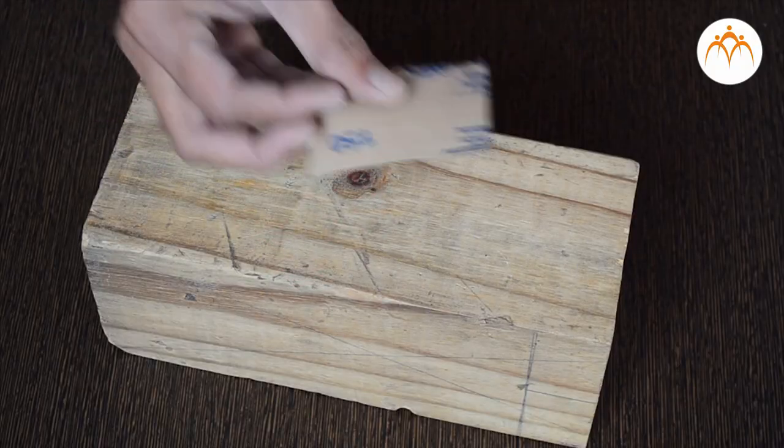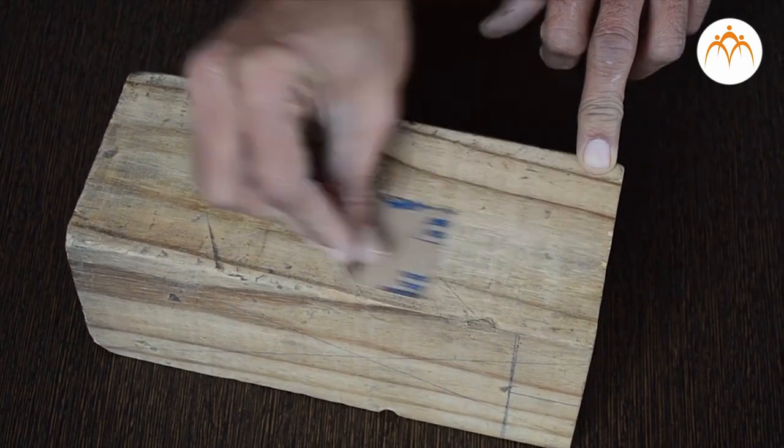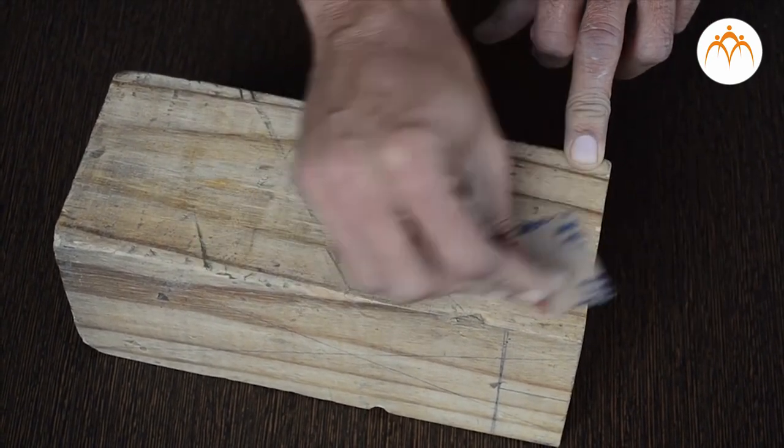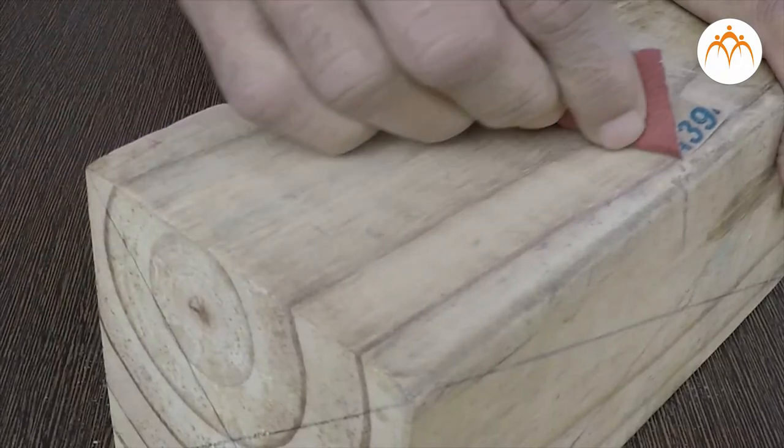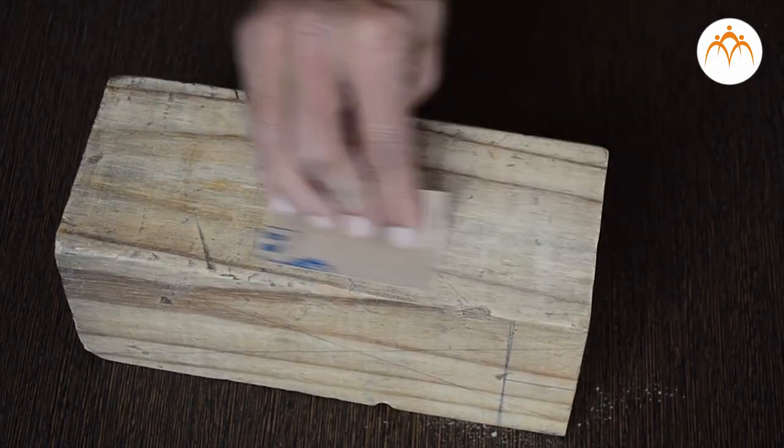Rub the sandpaper lightly on a piece of wood. Listen for the sound rubbing makes. Try rubbing fast and slow, and pressing lightly and heavily to get different sounds.